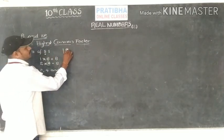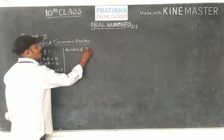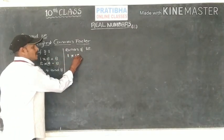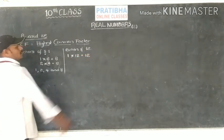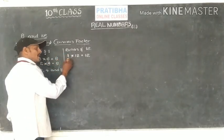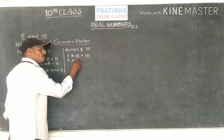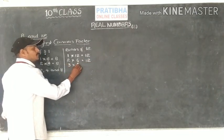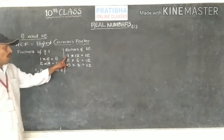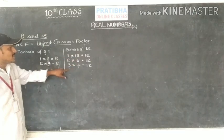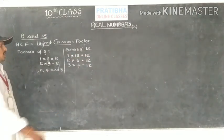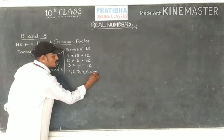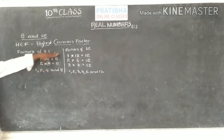Now let's write the factors of 12. The factors of 12 are: 1, because 12 times 1 gives 12. Then 2, because 2 multiplied by 6 gives 12. And 3 is also a factor. So the factors of 12 are 1, 2, 3, 4, 6, and 12. These six numbers are the factors of 12.